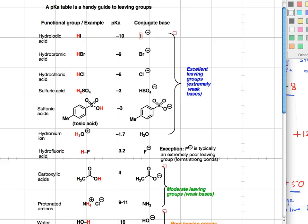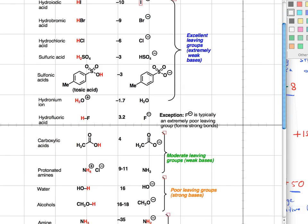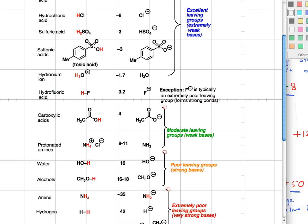And in the next video, we'll actually go through an example of how to use a pKa table to figure out if a reaction, an acid-base reaction, is going to work or not.